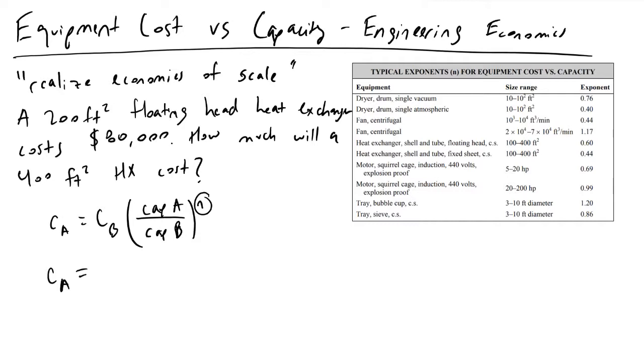And we know that the cost to install this 200 square foot one, B, was $80,000. And we're going to be multiplying this by the capacity of A, which is 400 square feet, over the capacity of B, which was 200 square feet.